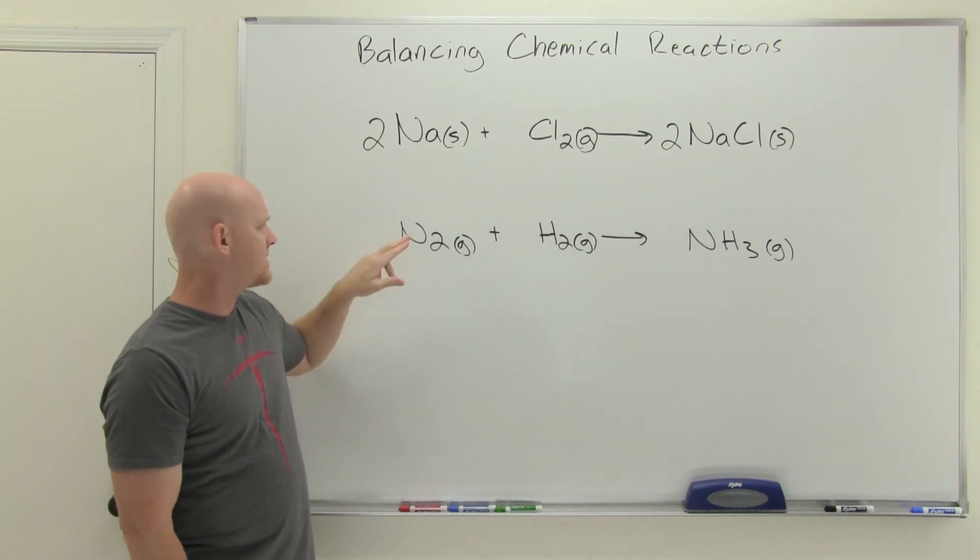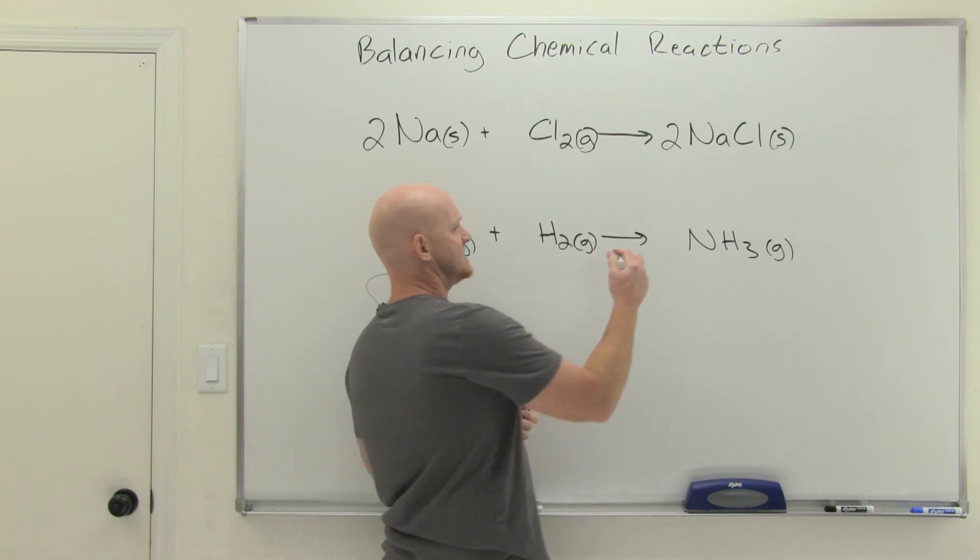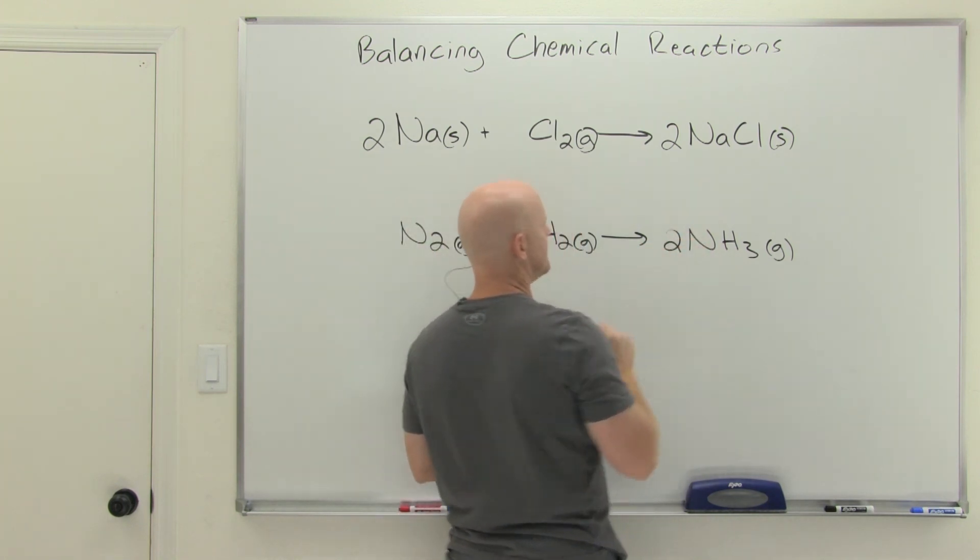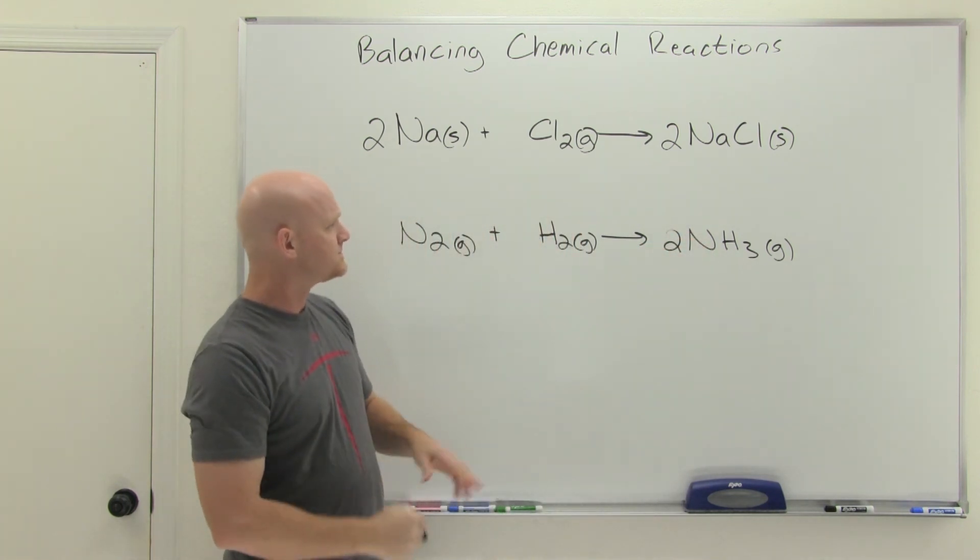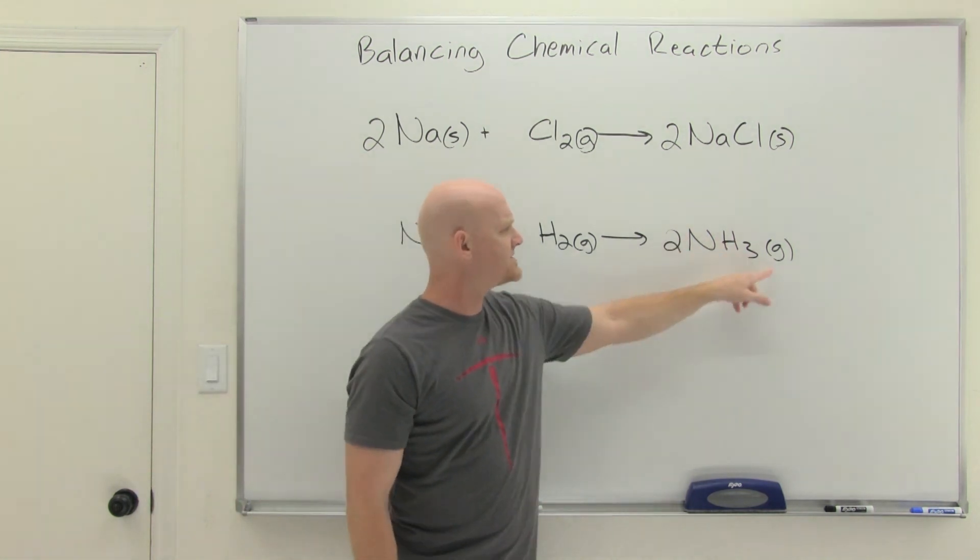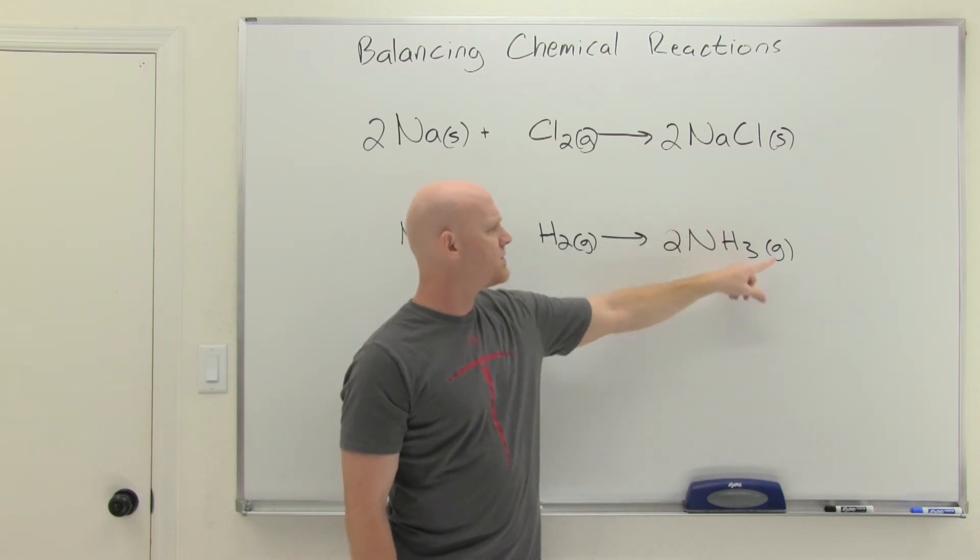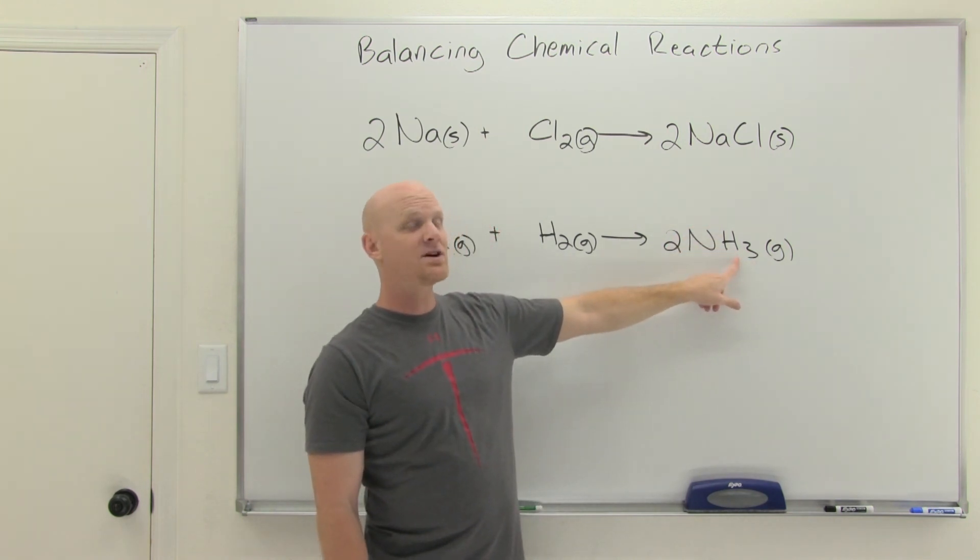And so if I start with nitrogens here, so two nitrogens on this side, I've only got one nitrogen on this side. So I'm going to have to put a two here to make that work. And now the nitrogens are balanced, but the hydrogens are not. So in this case, with two of the entire ammonia, that means if each ammonia has got three hydrogens, and I've got two of the whole thing, I've got six hydrogen atoms on this side.